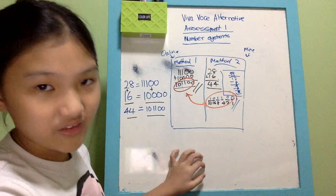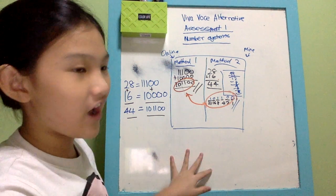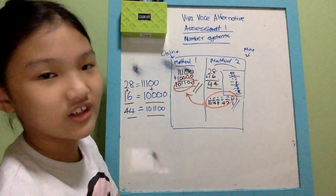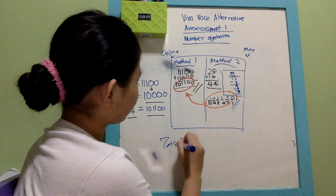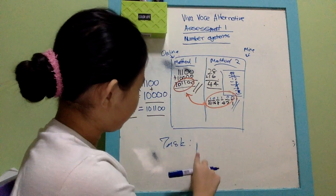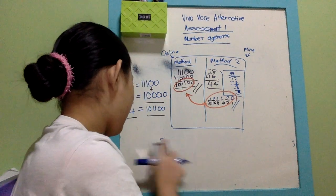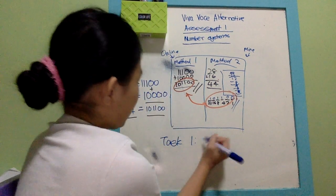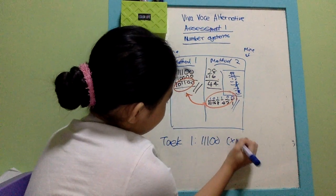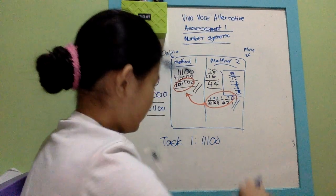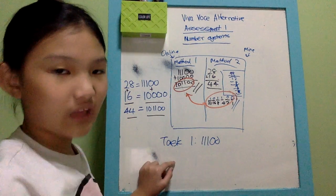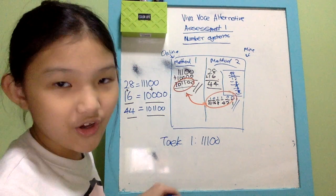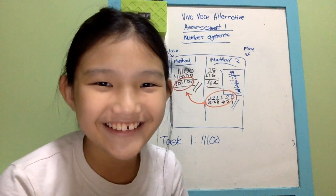For Task 2, all I needed to do was explain how I performed this arithmetic operation. For Task 1 the answer was obtained by adding the NRIC digits and converting using the eight-lines method, as shown. Thanks for watching — bye!